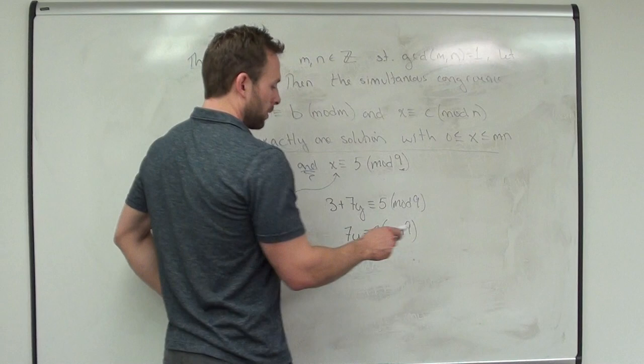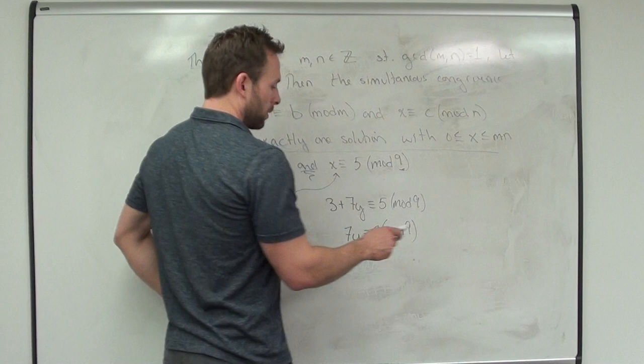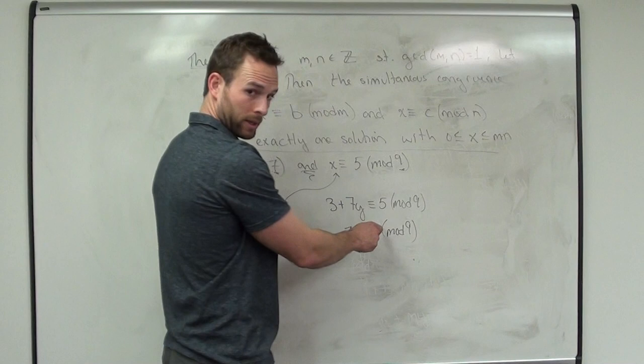We have a couple of different options to solve this. We know when we have a solution: the GCD of 7 and 9 is 1, and 1 divides 2, so this has exactly one solution. To find that solution, we would work out the Euclidean algorithm, which is what we did back in the linear congruence theorem.